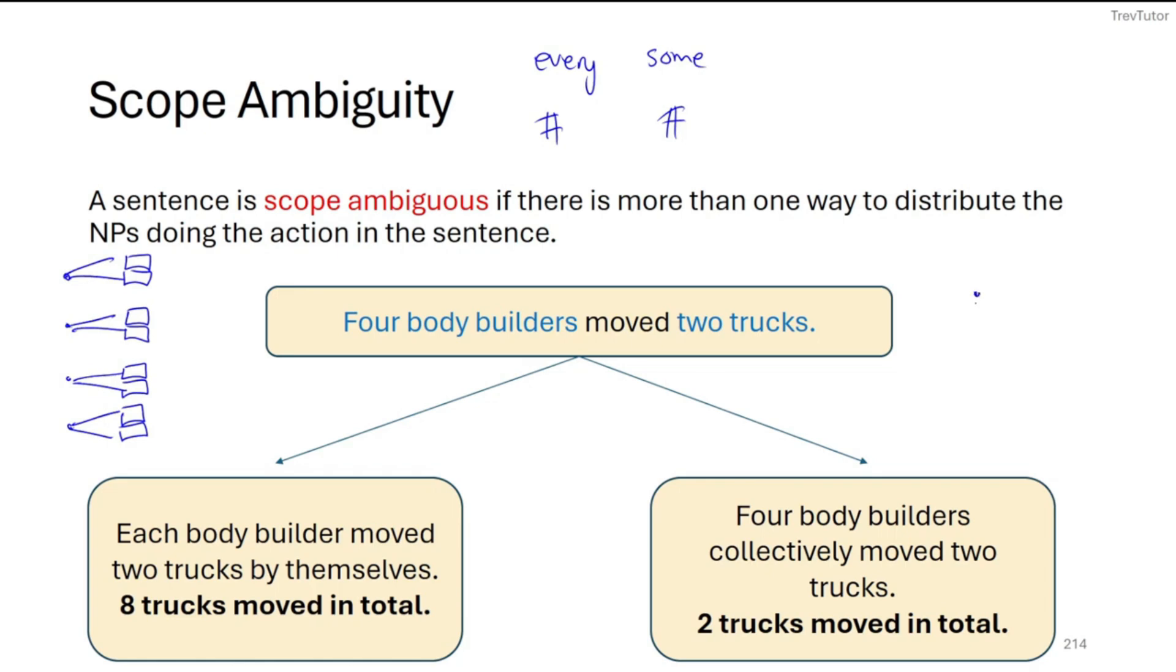Or it could be the case for four bodybuilders move two trucks that each of them were doing them together. So four bodybuilders are moving the first truck, and then four bodybuilders are moving the second truck. So in total, there would be two trucks. So this is what scope ambiguity is.